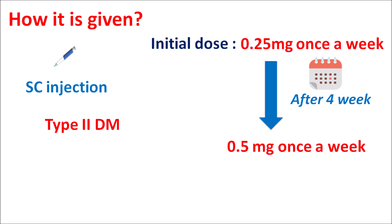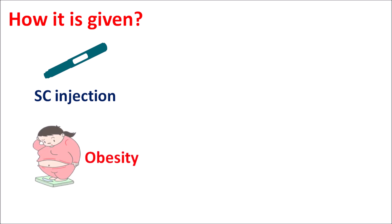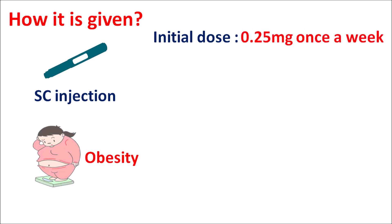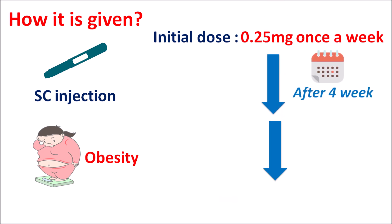Semaglutide is also available as a subcutaneous injection for the management of obesity. For this purpose, the initial dose is 0.25 mg given once a week. The dose can be increased based on the goals of treatment, but increments should be done after every 4 weeks. The dose can be increased up to 2.4 mg given once a week, which is the maintenance dose for the treatment of obesity.